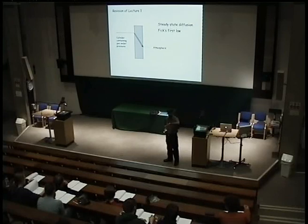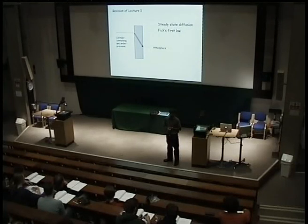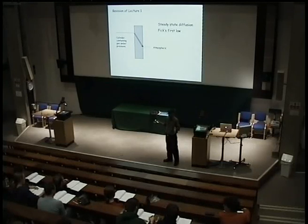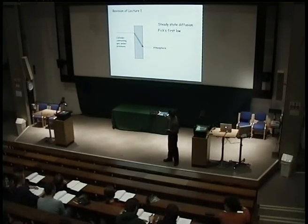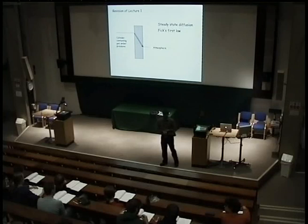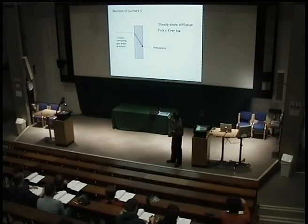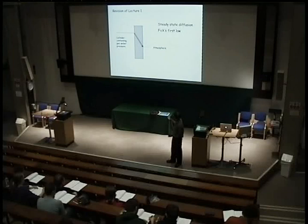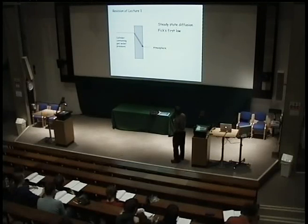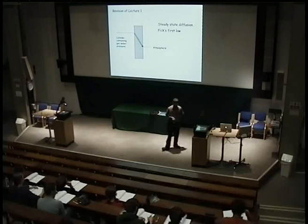Steady-state means there's diffusion going on, but you don't actually see any change in the concentration profile inside the region where diffusion is happening. A typical scenario is a gas cylinder containing atomic hydrogen. There's a certain pressure inside the cylinder, and outside you can assume the pressure is zero for hydrogen. Because this is a thin wall, it's diffusing at a constant rate. There's a constant flux, the gradient remains the same, and an observer at that point would see no change happening, even though diffusion is occurring.